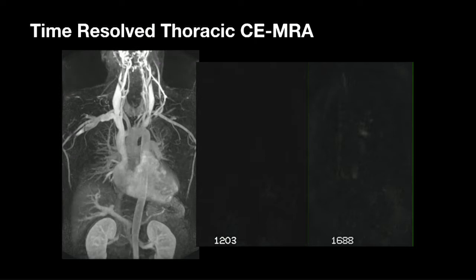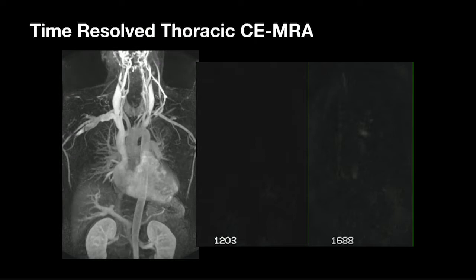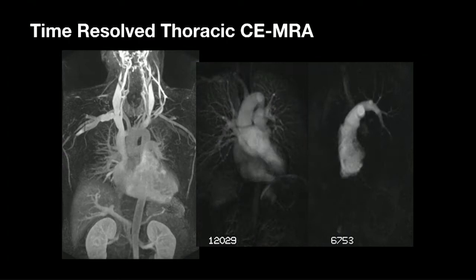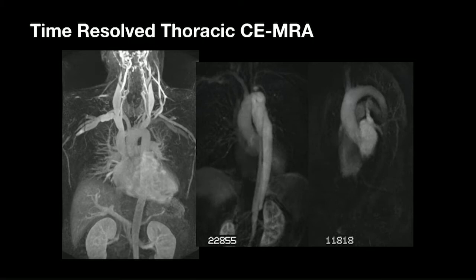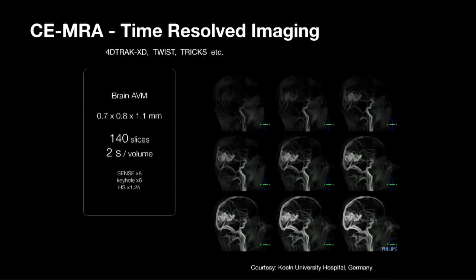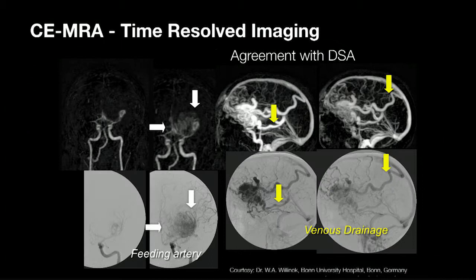These techniques work in other parts of the body too. In the thorax, here's a patient with a dissection showing a true 3D examination with the true lumen filling before the false lumen in a dissection of the descending thoracic aorta. It also works in the head — we can use it for looking at AVMs in the brain and get very good correlation with DSA as a non-invasive examination.